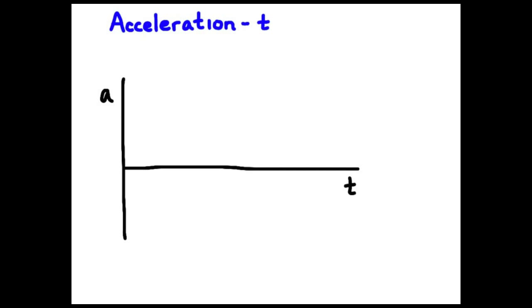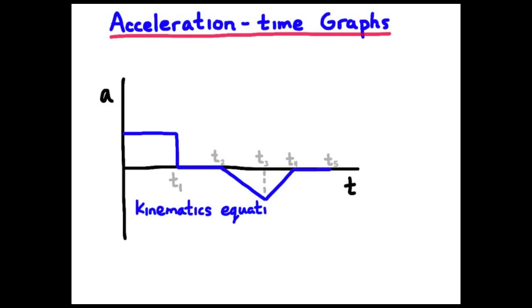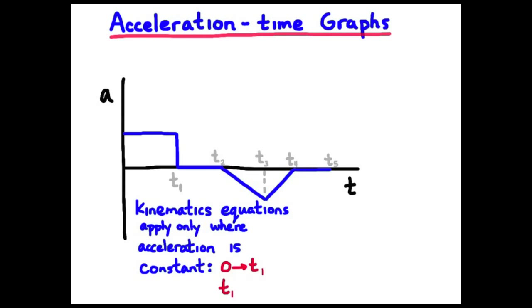Let's look at the acceleration-time graph for an object. I'll make up a graph with some interesting segments: T1, T2, T3, T4, and T5 define the different segments. Our model of motion — our six kinematics equations — only applies where acceleration is constant, and so only applies over those three time intervals for this particular example.